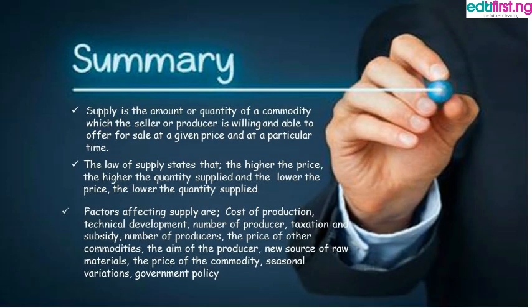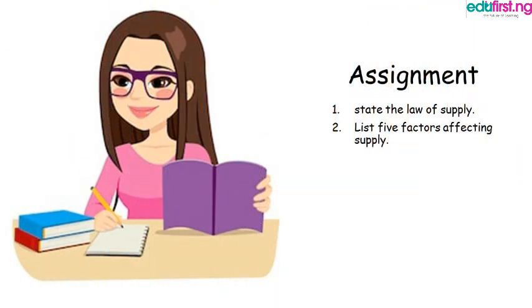In summary, supply is the amount or quantity of a commodity which the seller or producer is willing and able to offer for sale at a given price and at a particular time. The law of supply states that the higher the price, the higher the quantity supplied, and the lower the price, the lower the quantity supplied. The factors affecting supply include cost of production, technical development, number of producers, taxation and subsidy, price of other commodities, aim of the producer, new source of raw materials, price of the commodity, seasonal variations, and government policy. Assignment: (1) State the law of supply. (2) List five factors affecting supply.